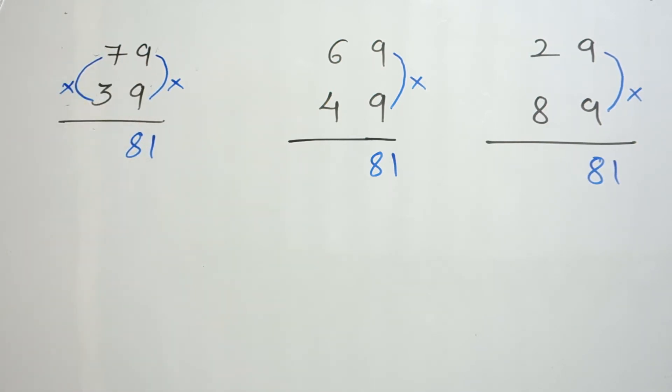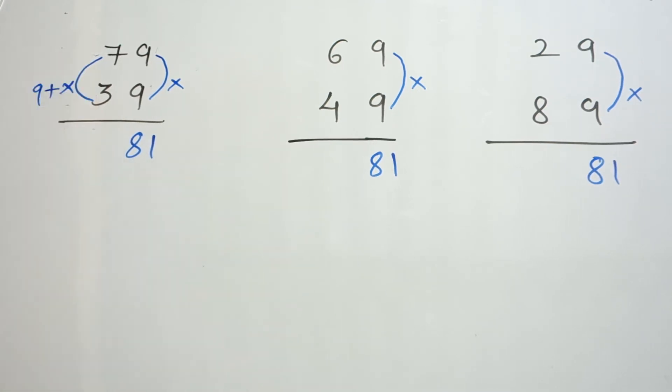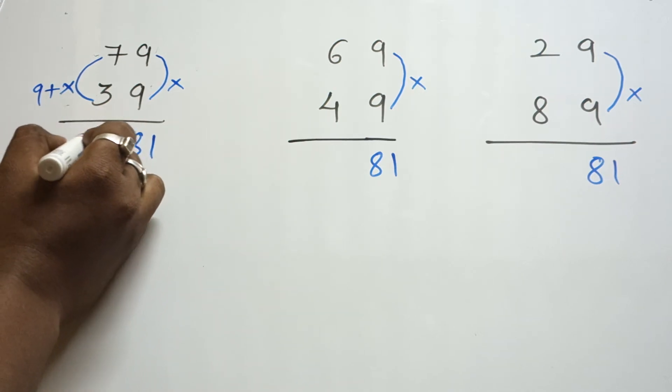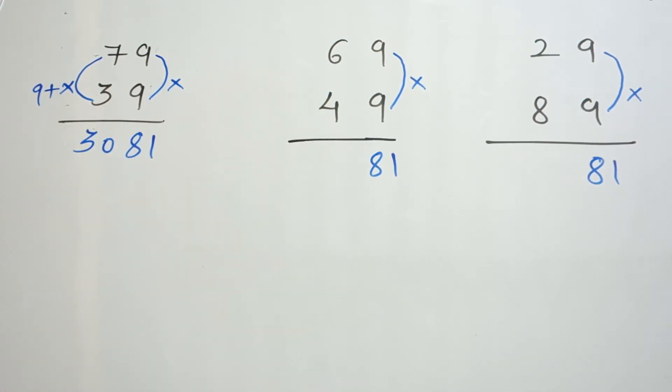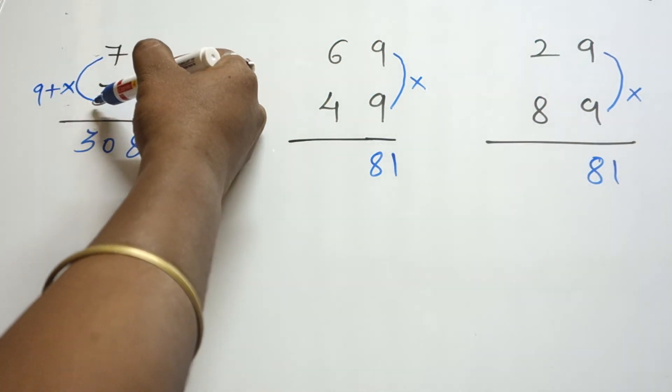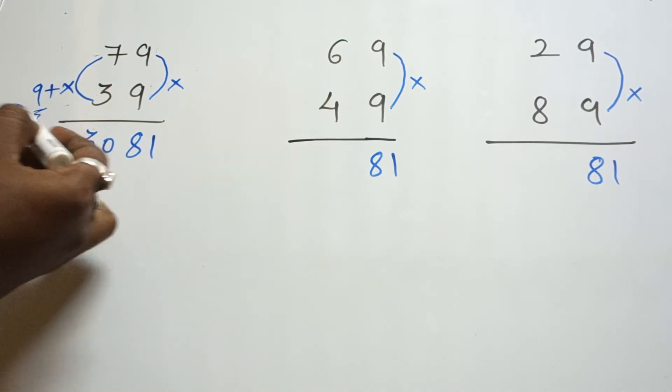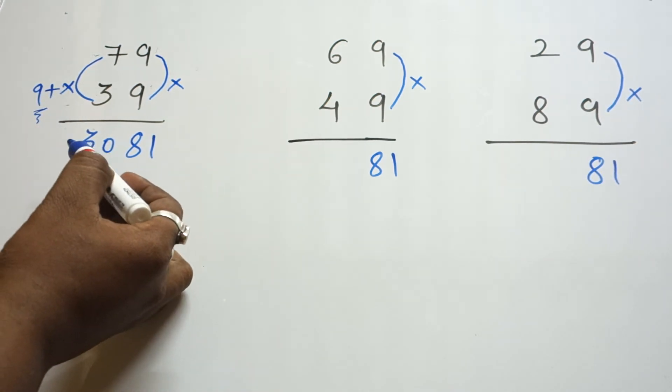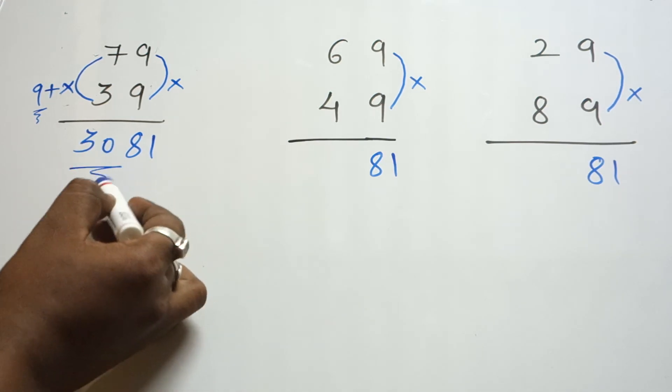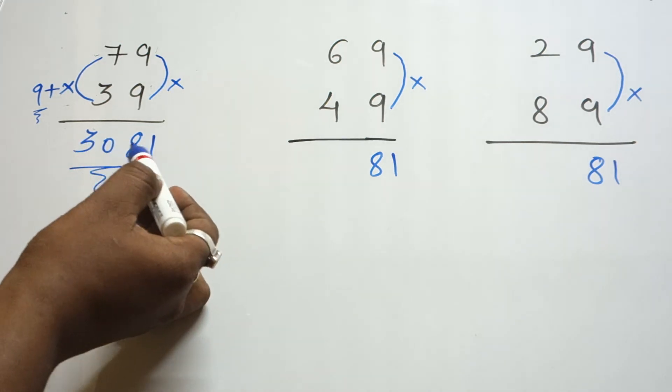Now multiply this number: 7 times 3 is 21, add 9 to it, so 21 plus 9 is 30. Once again, multiply this number, that is 7 times 3 is 21, add 9 to it, so 21 plus 9 is 30. So when you multiply 79 into 39, you will get the answer 3081.